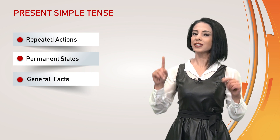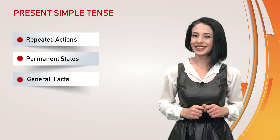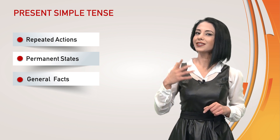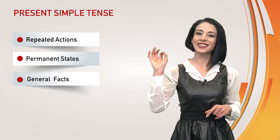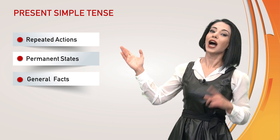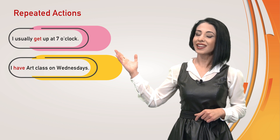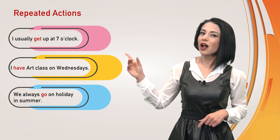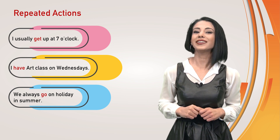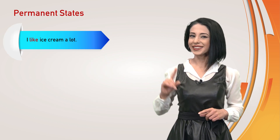Let's start with repeated actions — usual activities which are repeated every day, every week, every year, etc. I usually get up at 7 o'clock. I have art class on Wednesdays. We always go on holiday in summer.